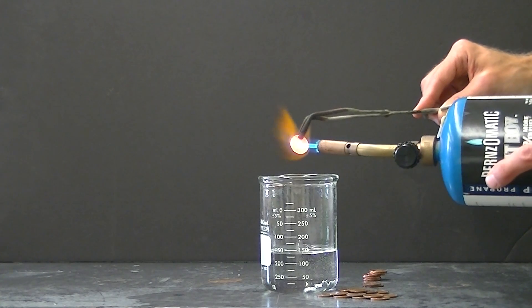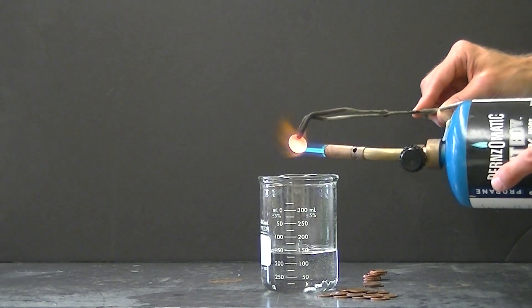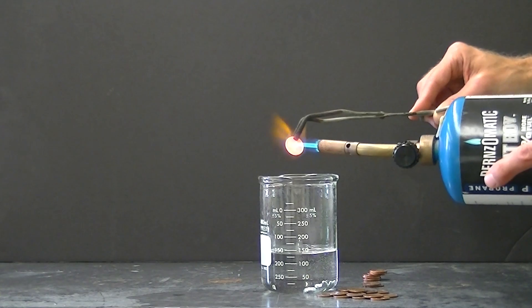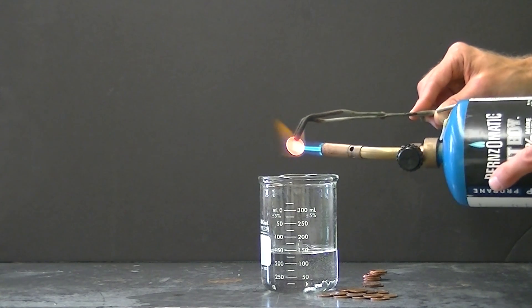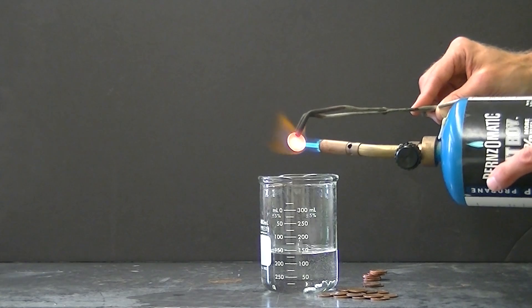But it doesn't melt. The blowtorch can't provide sufficient energy to heat the penny to a temperature that remains at or above 1,085 Celsius. This is kind of neat too.